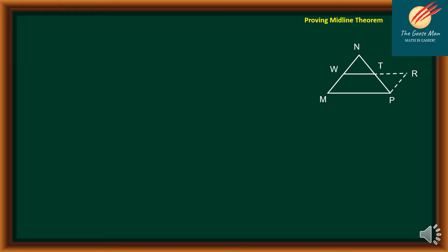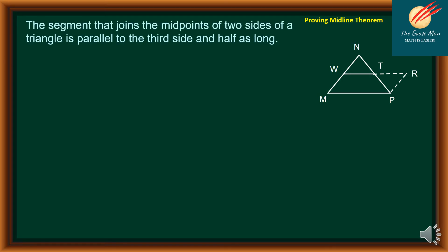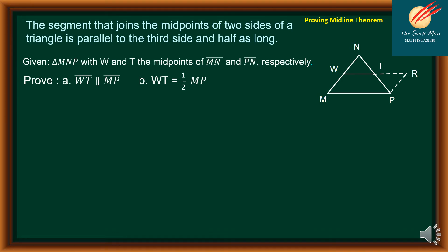Let's begin with our proving. Consider the figure on the right side. We would like to prove that the segment joining the midpoints of two sides of a triangle is parallel to the third side and half as long. Our given is triangle MNP with W and T the midpoints of MN and PN respectively. We'd like to prove two things: first, that WT is parallel to MP, and second, that WT is equal to one-half MP.